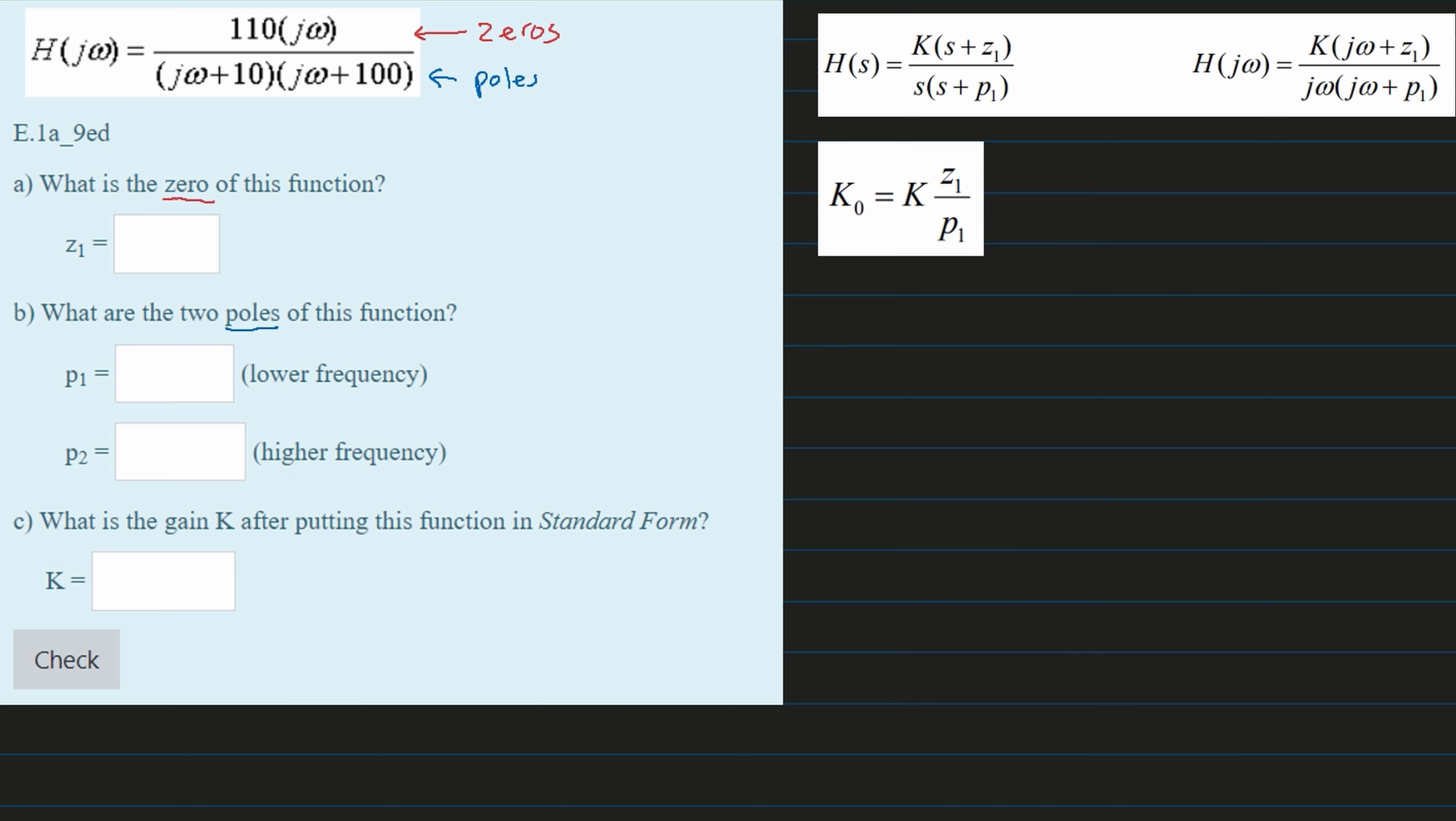So when we look at the zeros part for part a, we see we have nothing right here. So that means our z1 is zero.